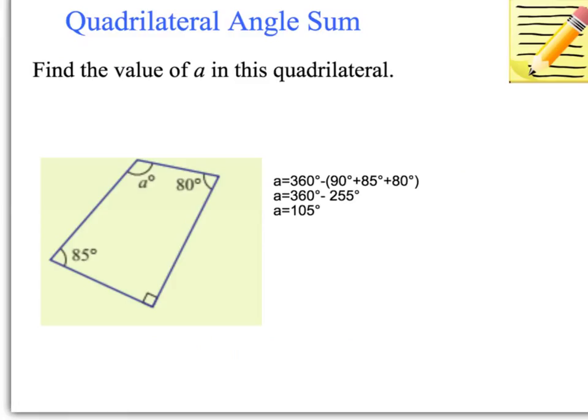Let's try some examples. We need to find the value of A in this quadrilateral. We know that the angles of a quadrilateral add to 360 degrees, so we just need to add up the known angles and take them away from 360. We've got 85 degrees and 80 degrees, and because we can see this is a right angle, that's 90 degrees here.